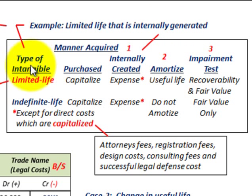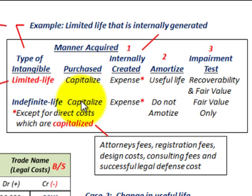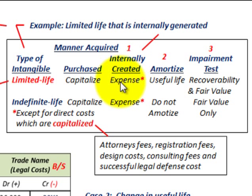When dealing with intangible assets you really have two types: ones with limited life and others with indefinite life that go into perpetuity. For a purchased intangible — whether limited or indefinite life — you capitalize the amount. For an internally generated or created intangible, you would be expensing it, whether limited life or indefinite life.